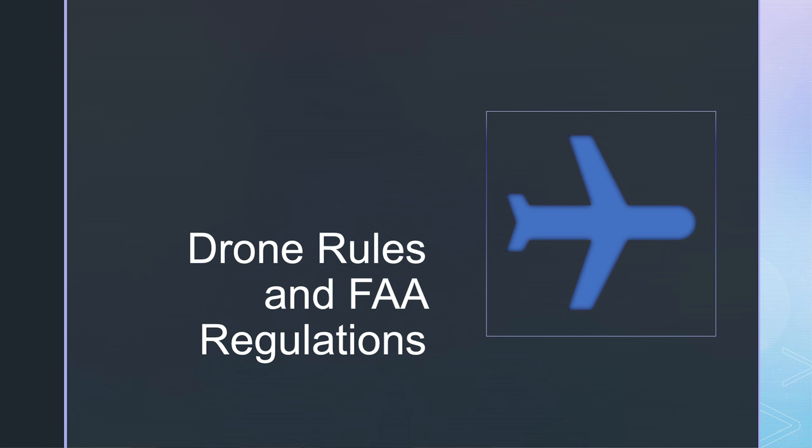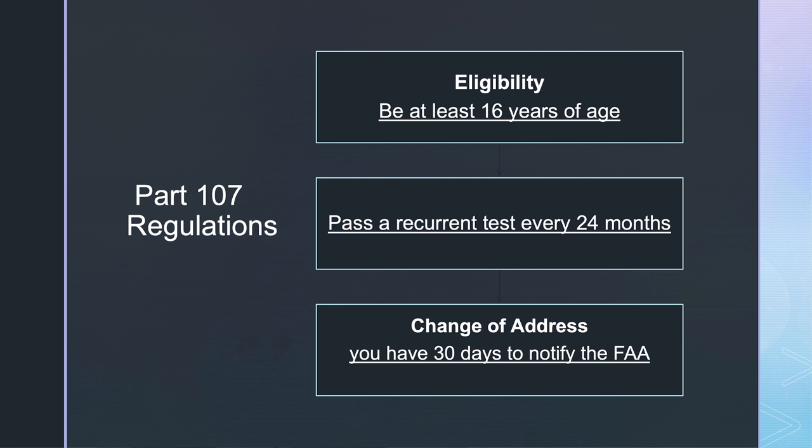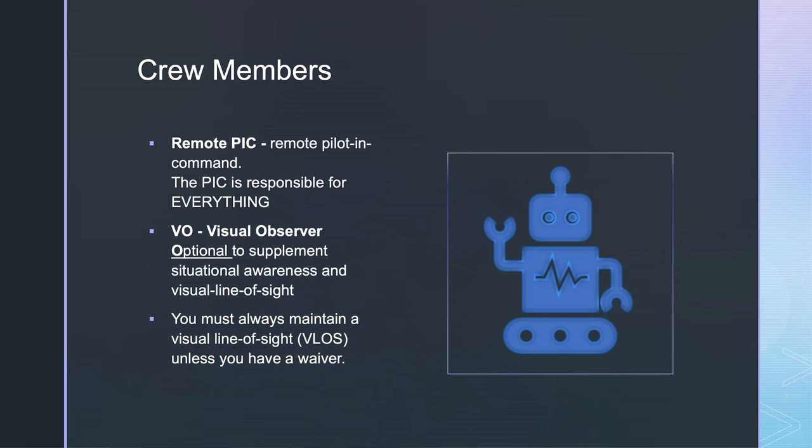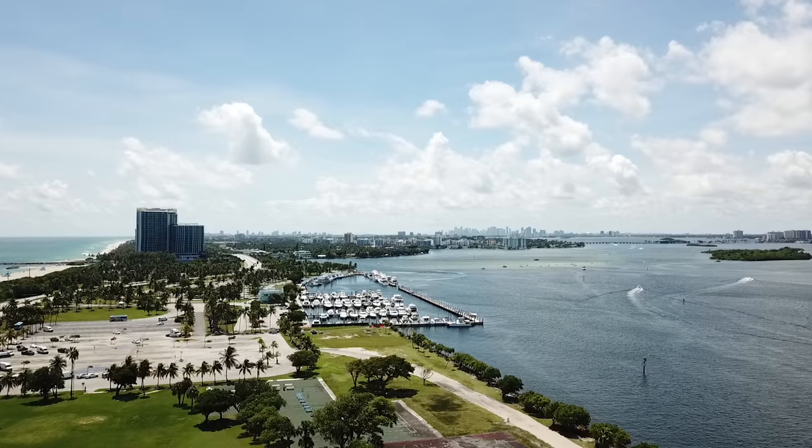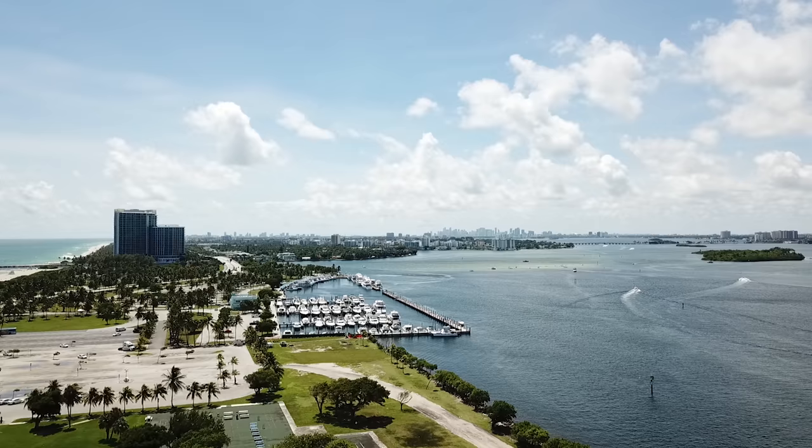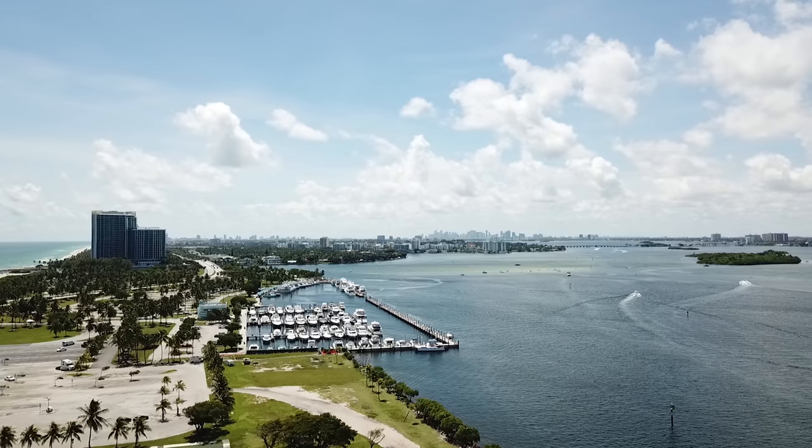Let's start by going over the drone rules and FAA regulations. In order to be eligible, you have to be 16 years of age. You have to pass a recurrent test every 24 months. If you change your address, you have 30 days to notify the FAA. When you fly a drone, the crew members available are the pilot in command, which is yourself. You have to be certified and you are responsible for everything.